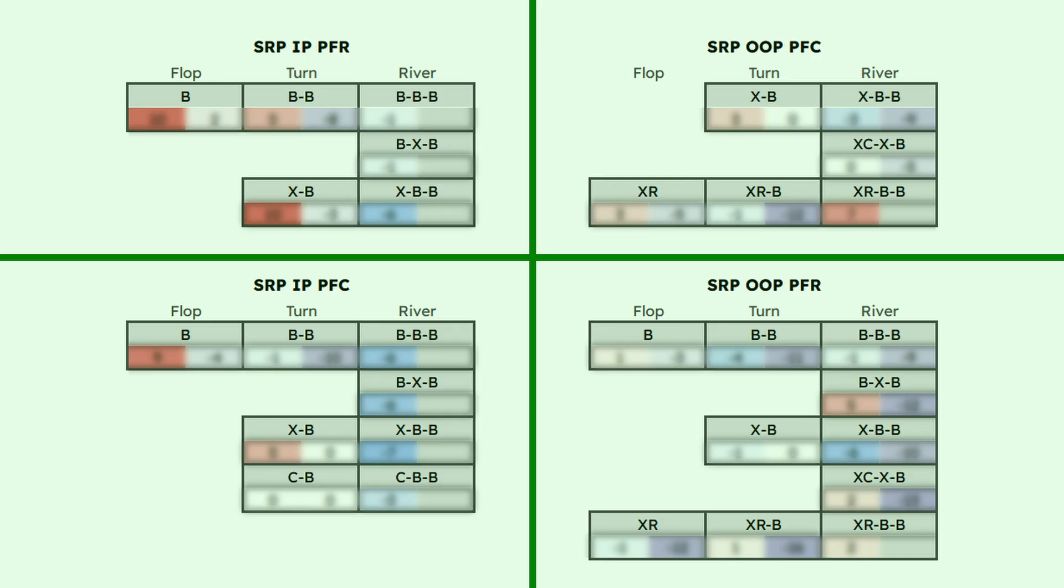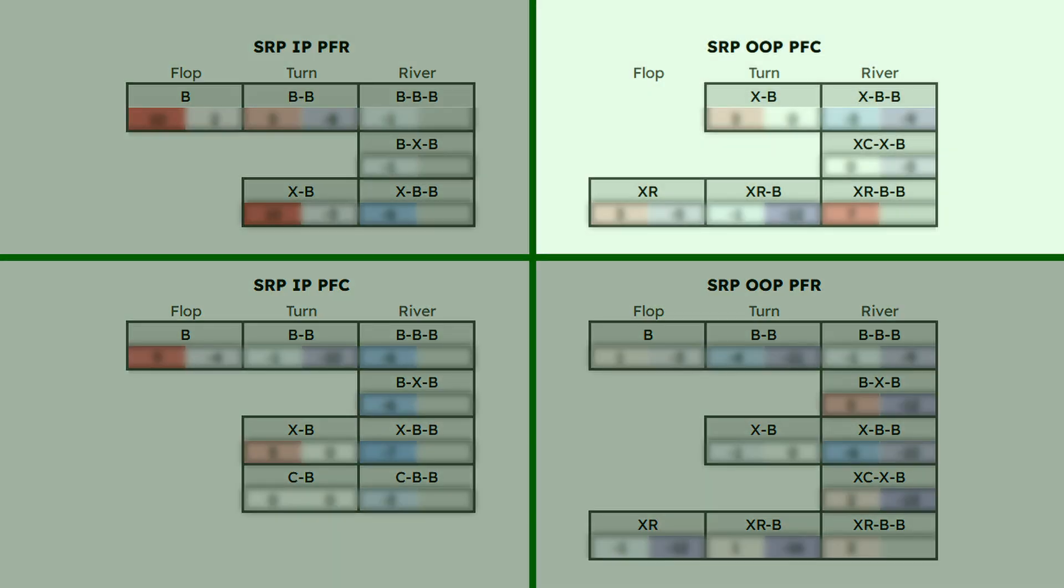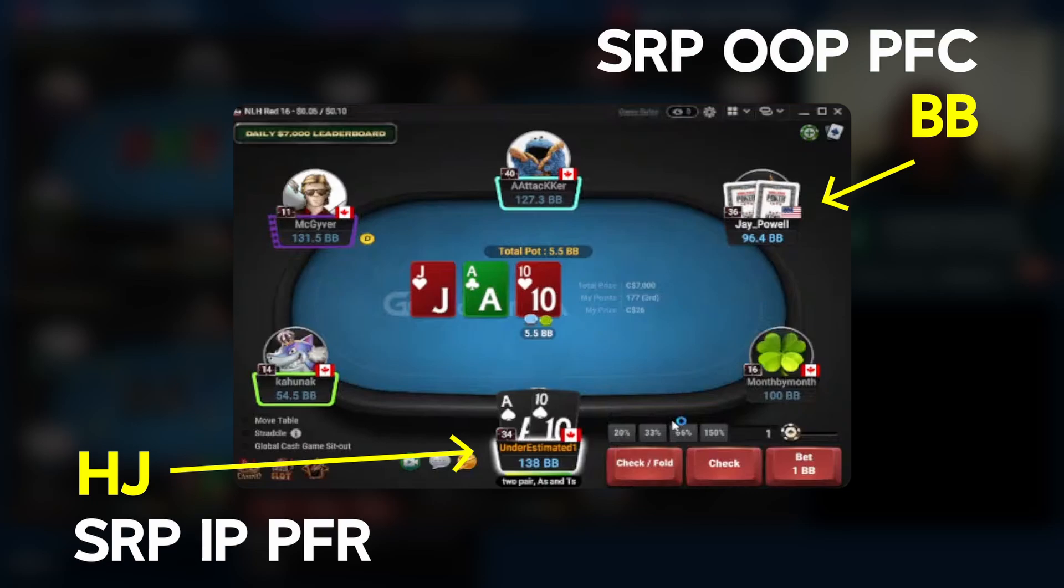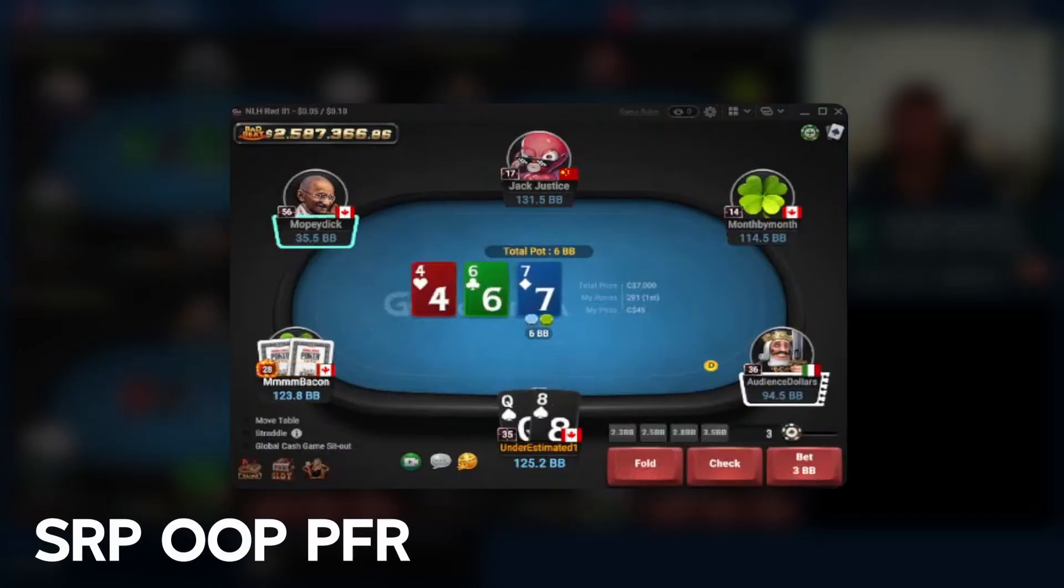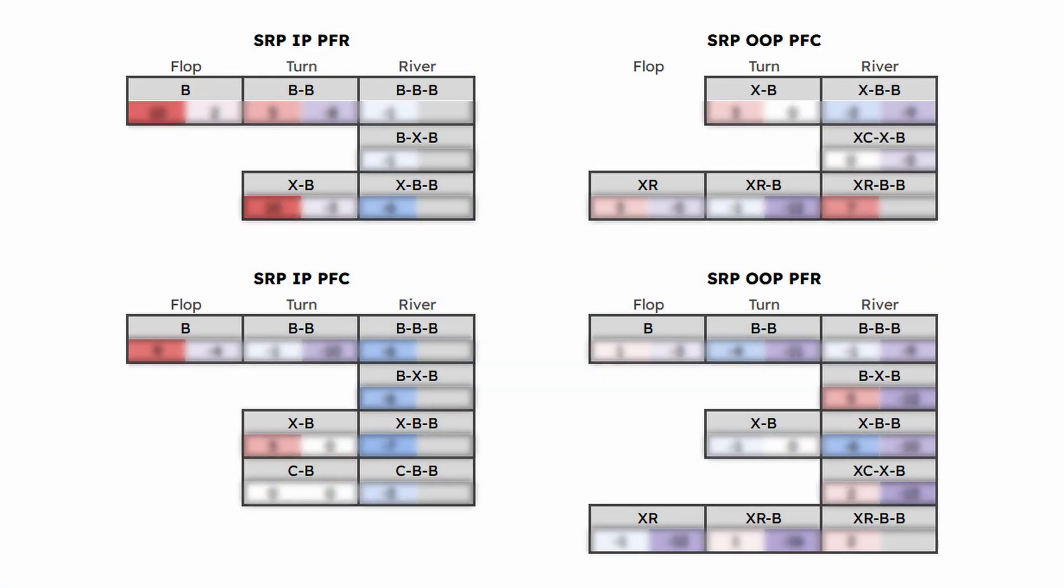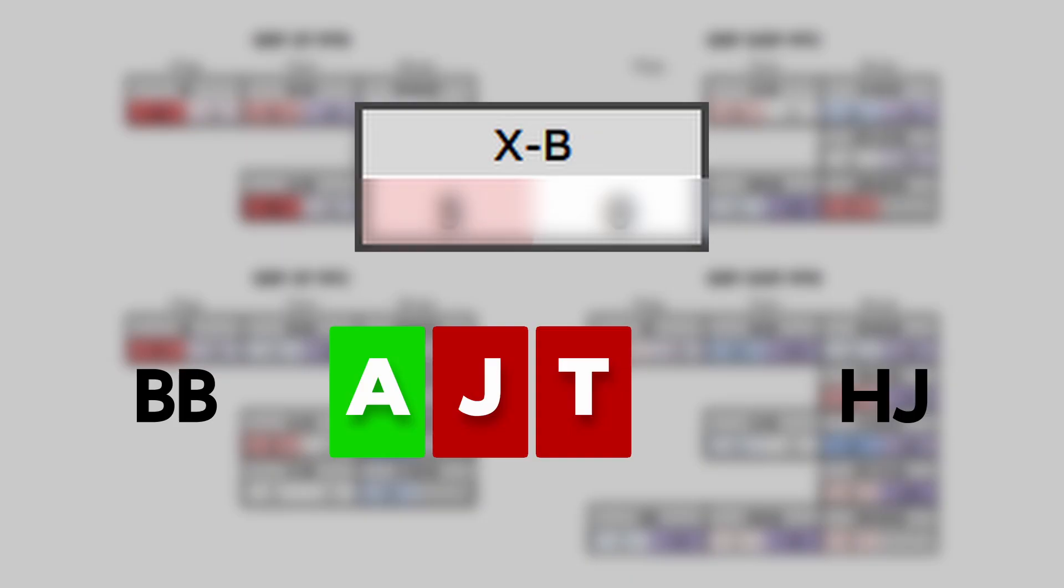Take a look here. Each quadrant represents a poker formation like SRP-IPPFR or SRP-OOP-PFC. You might remember from earlier that in a hijack vs. big blind single-raised pot, hijack would be considered the SRP-in-position preflop raiser and big blind would be the out-of-position preflop caller. By contrast, SRP-OOP-PFR and SRP-IPPFC refer to small blind vs. big blind pots, where small blind is the out-of-position preflop raiser and big blind is the in-position preflop caller. The boxes in each quadrant represent different nodes. For example, here's the check-bet node for big blind from earlier. This node took place when both players checked on the flop and big blind bet on the turn.